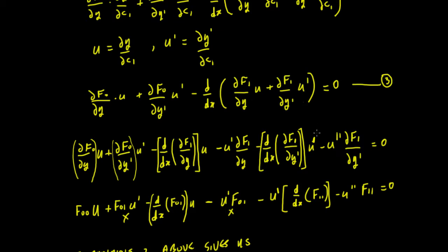Differentiating with respect to x gives u-double-prime, and multiplying it out partially with respect to y-prime gives that term there. So we get that term there. So we've got all these terms: 1, 2, 3, 4, 5, 6 terms.